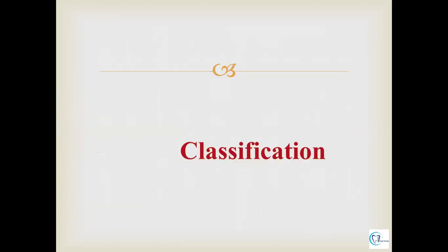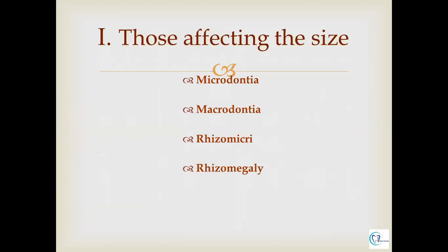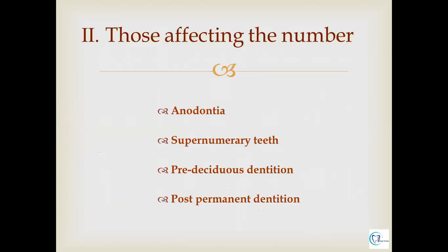Starting with the classification of developmental anomalies: those which affect the size include microdontia, macrodontia, rhizomicry, and rhizomegaly. Those affecting the number comprise anodontia, supernumerary teeth, pre-deciduous dentition, and post-permanent dentition.